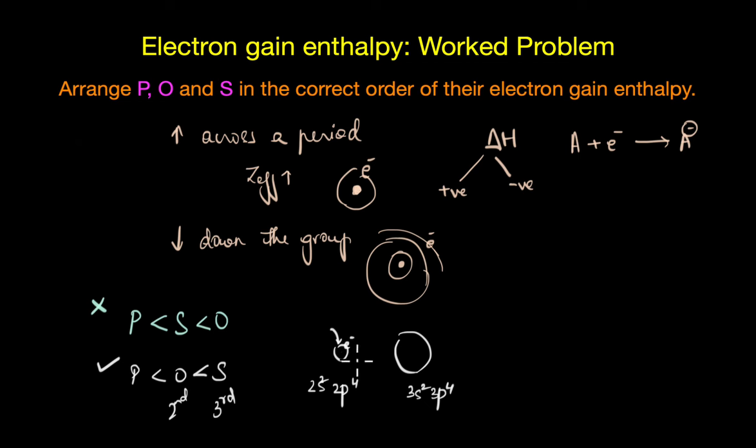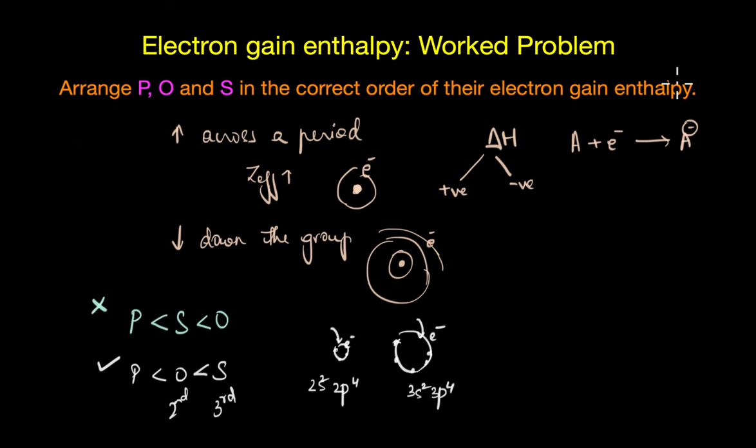Now because of the small size, the added electron in the oxygen atom experiences very high electron-electron repulsions because all the electrons are in the second shell as compared to sulphur where the electron goes to the third energy level. In the case of sulphur, the added electron occupies much larger space and as a result the electrons experience less repulsion from each other. This is why electron gain enthalpy of sulphur is greater than oxygen.